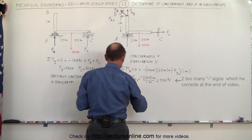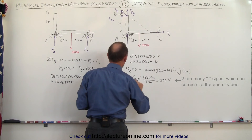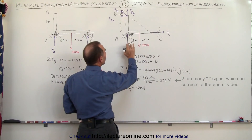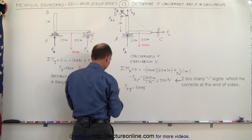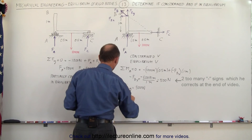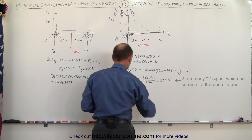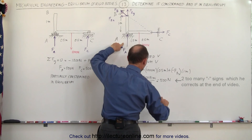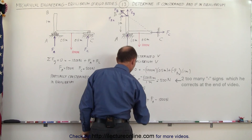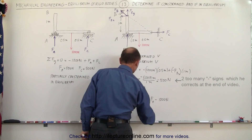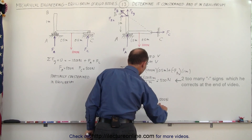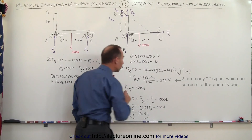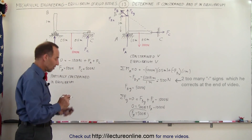So F_By must also be 500 Newtons. With F_By at 500 Newtons and the applied load at a thousand Newtons, there is only one more force holding back the weight in the vertical direction. The sum of forces in the y-direction equals zero: F_By plus F_A minus a thousand Newtons equals zero. That gives us 500 plus F_A minus a thousand equals zero, so the force at A must therefore also be 500 Newtons. All forces can be determined, the system is constrained, and it is in equilibrium.